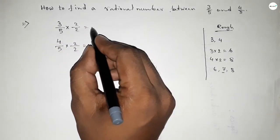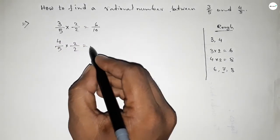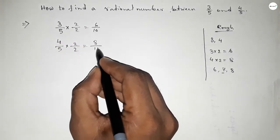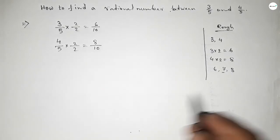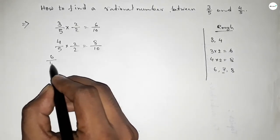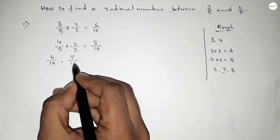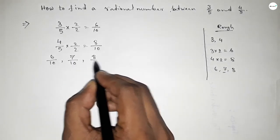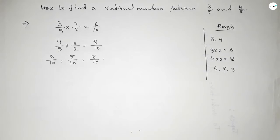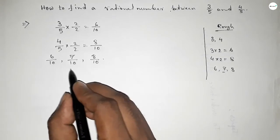This gives us 6/10 and 8/10. Between 6 and 8, we can get one natural number, and with this natural number we can form a rational number.